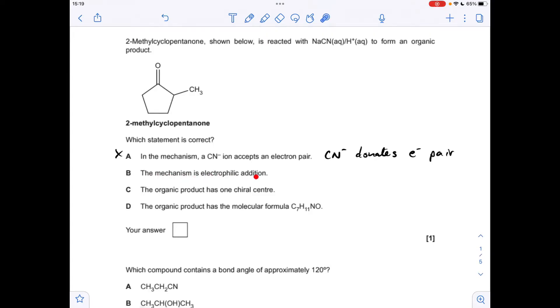So that means B can't be right either because it's going to be nucleophilic there, not electrophilic. It's actually nucleophilic addition. Moving on to C, you'll notice I've drawn up the product of the reaction. The organic product has one chiral centre. Well, that's not true because we've got a chiral centre here and that's also a chiral centre because there's a hydrogen not shown in that skeletal formula. So D's got to be the right answer and it is indeed. The molecular formula for this product is C7H11NO. So D is the answer.